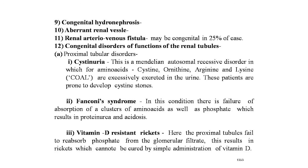First, proximal tubular disorders: the first subtype is cystinuria, a Mendelian autosomal recessive disorder in which four amino acids — cystine, ornithine, arginine, and lysine — are excessively excreted in the urine. These patients are prone to develop cystine stones. Next is Fanconi's syndrome, where there is failure of absorption of amino acids and phosphates, resulting in proteinuria and acidosis. Third is vitamin D-resistant rickets, where the proximal tubules fail to reabsorb phosphates from the glomerular filtrate, causing rickets that cannot be cured by simple administration of vitamin D.